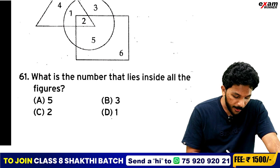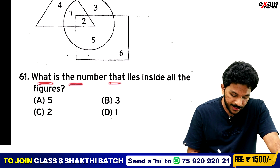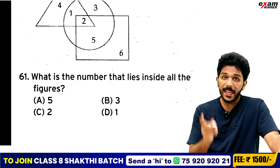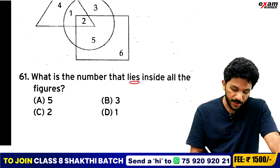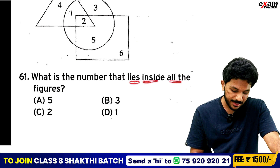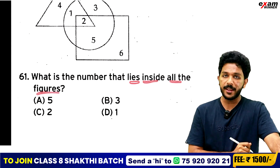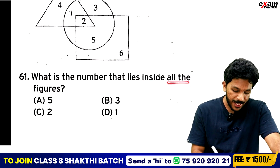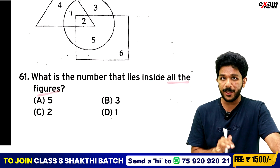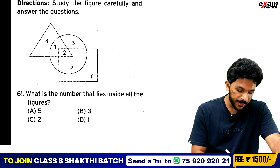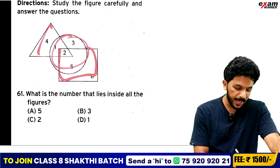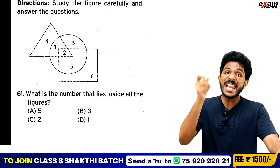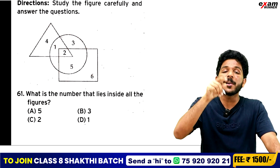What is the number that lies inside all the figures? What is the number that lies inside all shapes — the square, circle, and triangle?